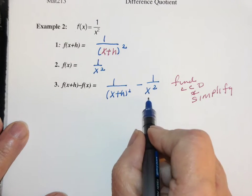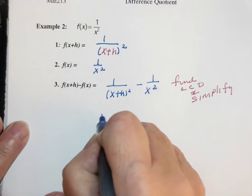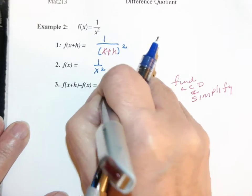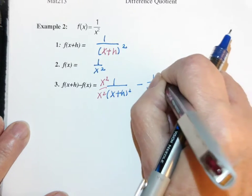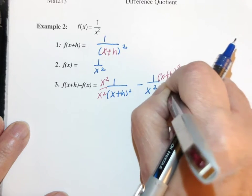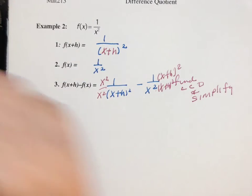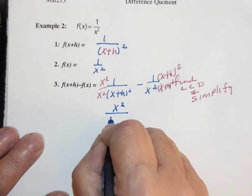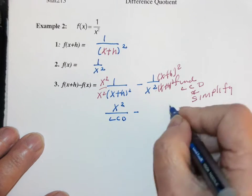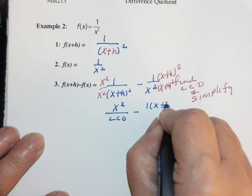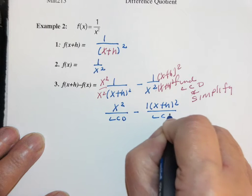And it's just x² times (x+h)². So I multiply this by x² over x², this by (x+h)² over (x+h)². I'm left with x² over the LCD minus 1 times (x+h)² all over the LCD.